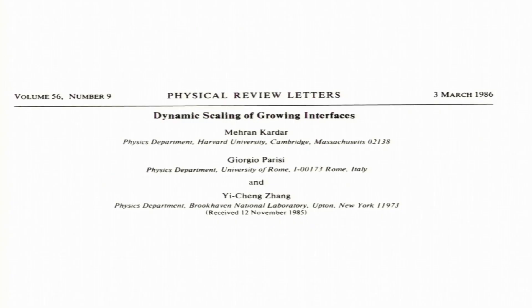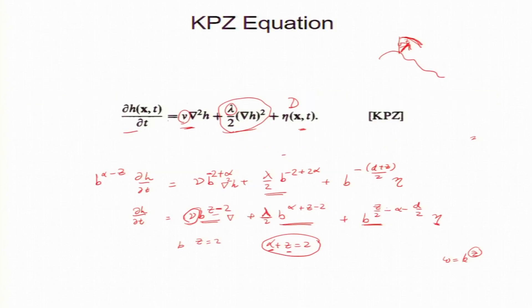So, KPZ is a Kardar-Parisi-Zhang equation. In fact, this is the famous paper which is one of the highest cited papers. So, 1986 and this paper proposed a model for surface growth.